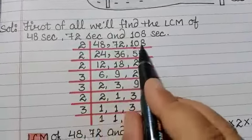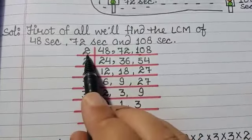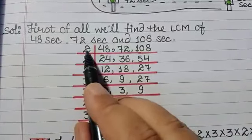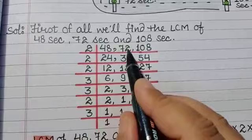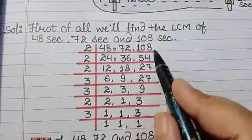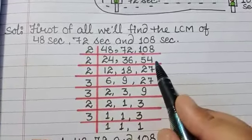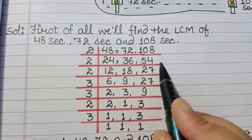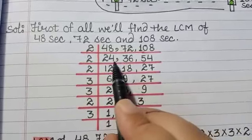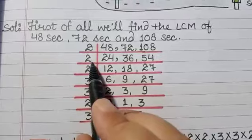So all three numbers are divisible by 2. 48 divided by 2 is 24, 72 divided by 2 is 36, 108 divided by 2 is 54. Again, all three numbers are even numbers, so all three numbers are divisible by 2 again.